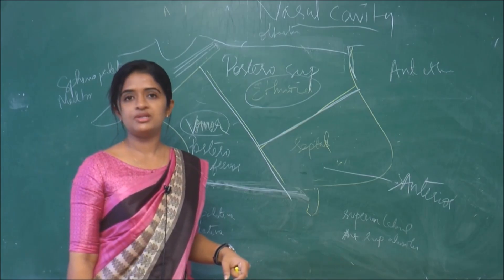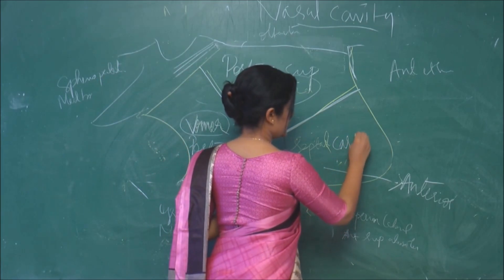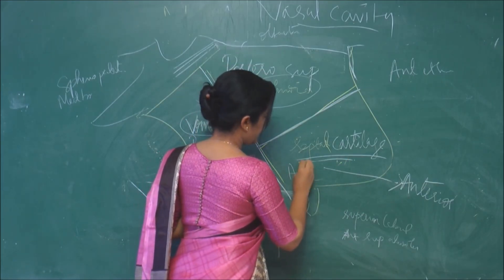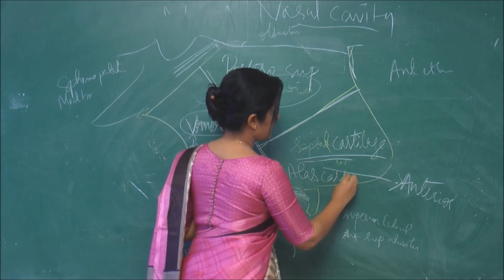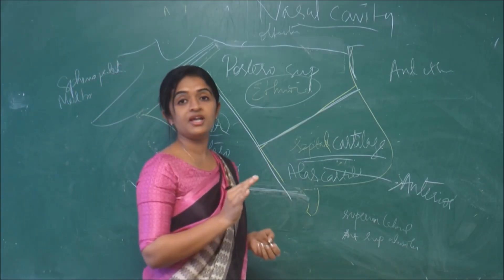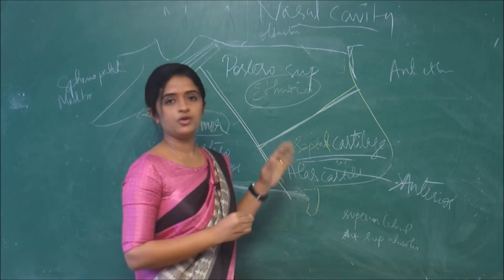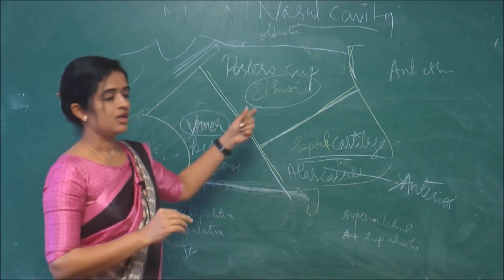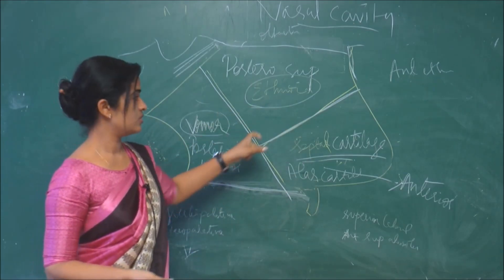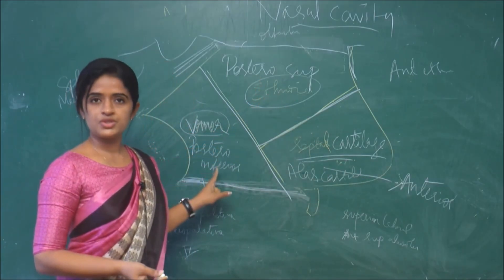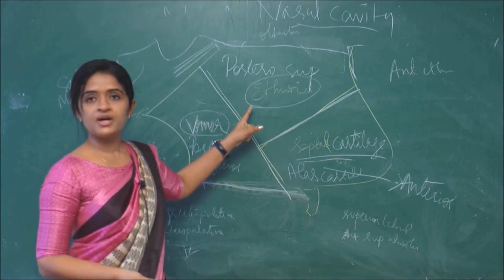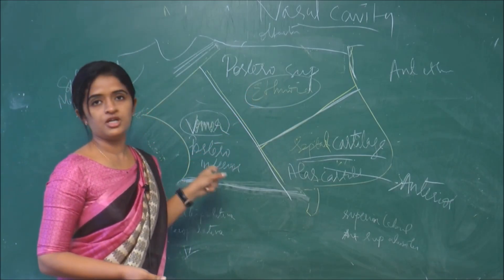The anterior part alone is made up of cartilage. The cartilage seen in the anterior aspect of the nasal septum is the septal cartilage, along with the ala cartilage. Part of the ala cartilage also contributes to the formation of the cartilaginous part. To summarize: the anterior part is cartilaginous, made up of septal cartilage and ala cartilage; the posterosuperior part is made up of the ethmoid; and the posteroinferior part is made up of the vomer.